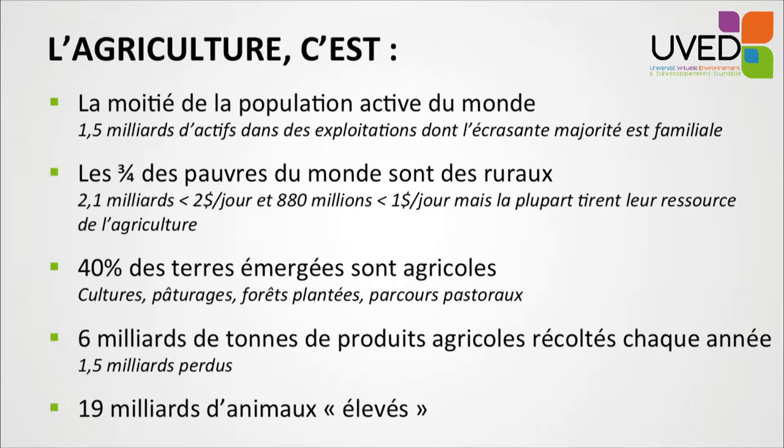What is striking is that this is exactly where we find the poorest populations. Three-quarters of the poor populations across the world — people living on less than $2 a day — work in agriculture and live in rural areas. Landscapes shaped by man with agriculture have covered a large part of the globe: 40% of the emerged land has been shaped by agriculture, with annual or perennial crops, pastoral grazing areas, or planted forests.